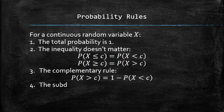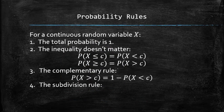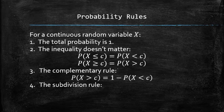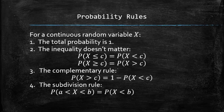The last probability rule for discrete random variables is called the subdivision rule. It allows us to find the probability of an event described by a two-sided inequality if the probabilities of the cumulative events are known or easier to find.